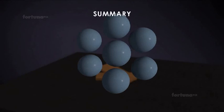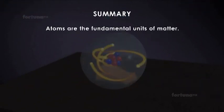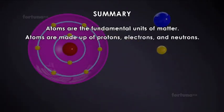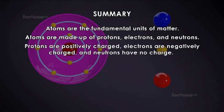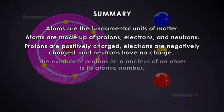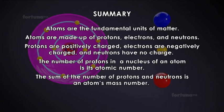Summary: Atoms are the fundamental units of matter. Atoms are made up of protons, electrons, and neutrons. Protons are positively charged, electrons are negatively charged, and neutrons have no charge. The number of protons in a nucleus of an atom is its atomic number. The sum of the number of protons and neutrons is an atom's mass number.